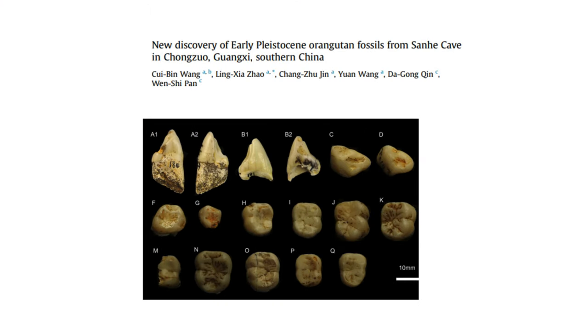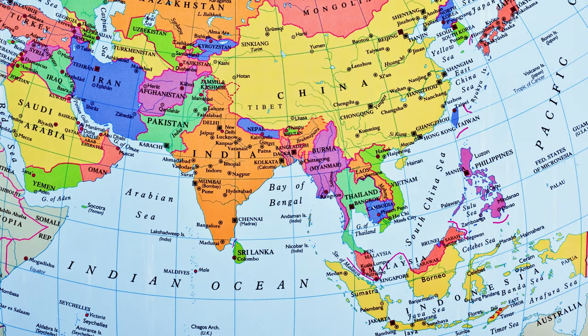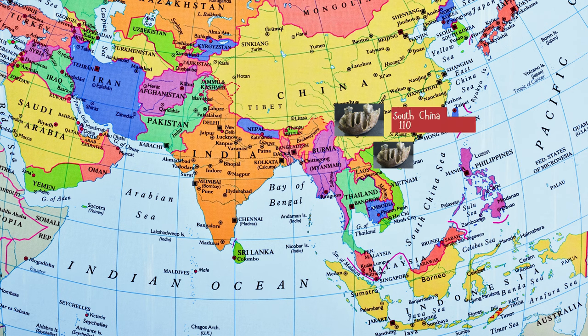Over time, during the middle and late Pleistocene, smaller-toothed species appeared. Several fossils from China and Vietnam indicate that Pleistocene orangutans were larger than modern ones but gradually became smaller over time, with the last large orangutans in South China going extinct about 110,000 years ago, and in northern Vietnam around 30,000 years ago.